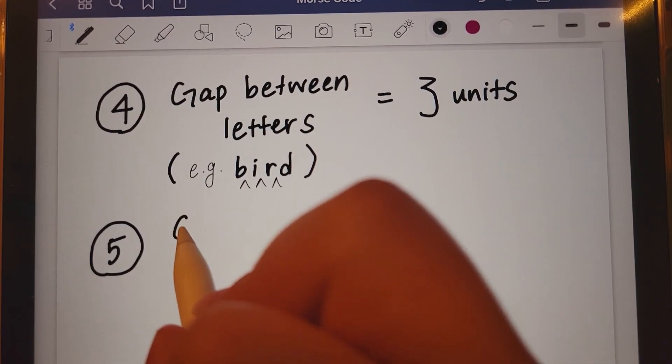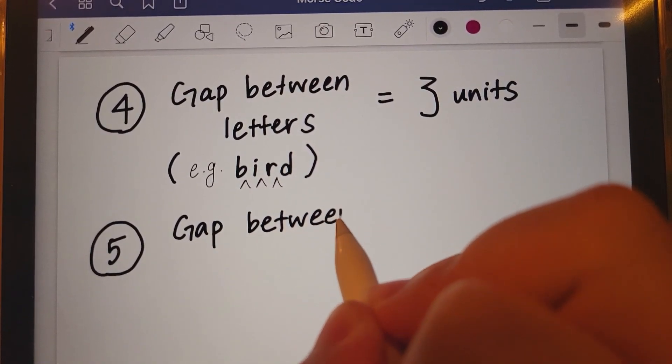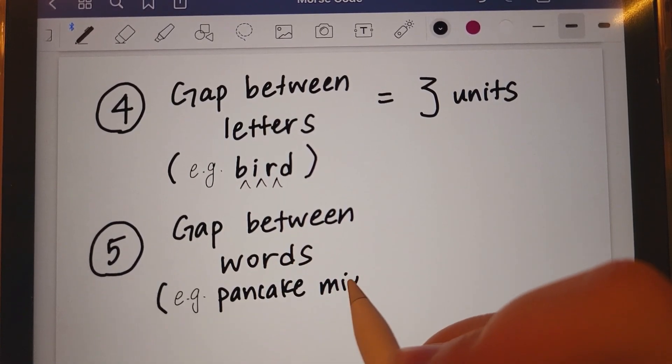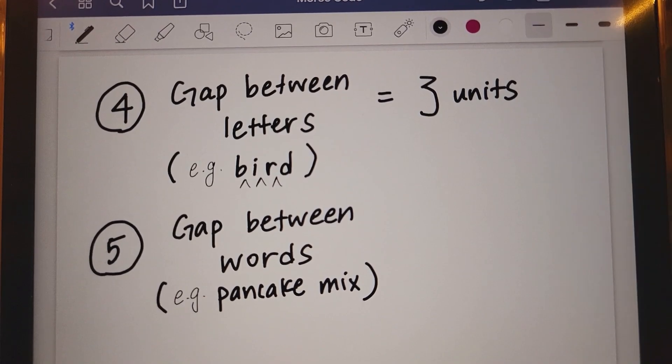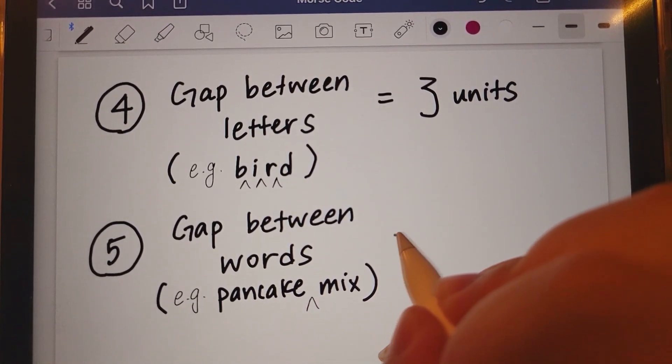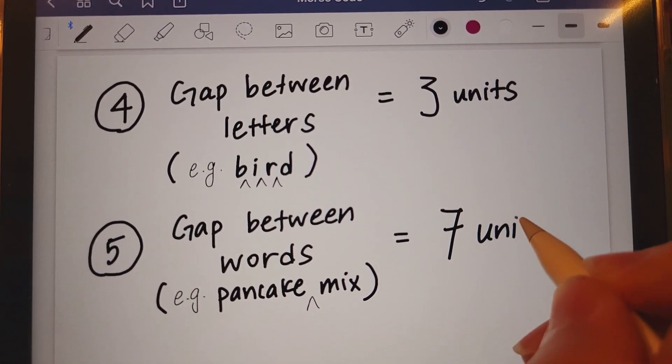And the last rule. The gap between words. Example, pancake mix. There would be one gap between those two words, and that's equivalent to seven units.